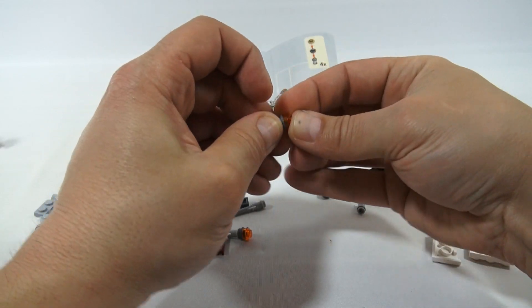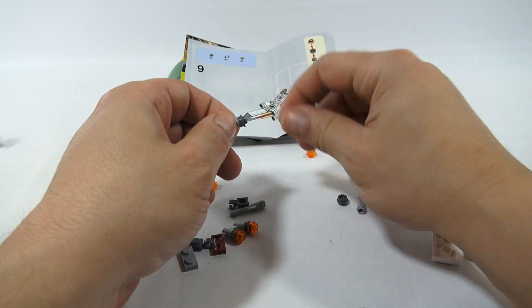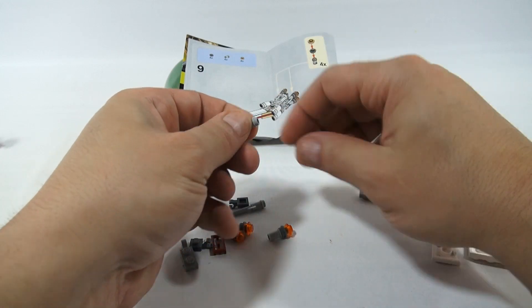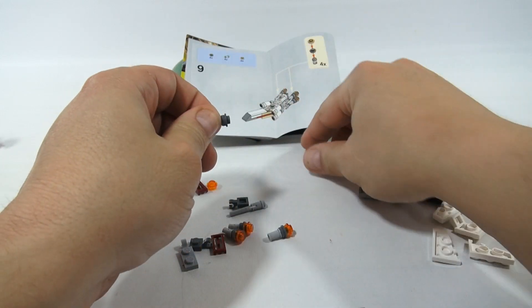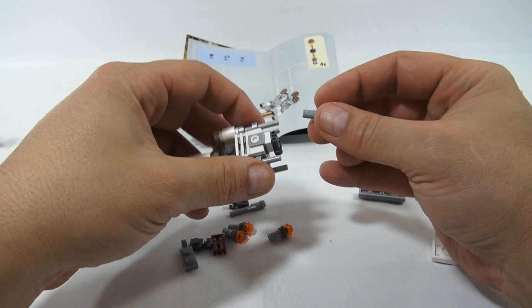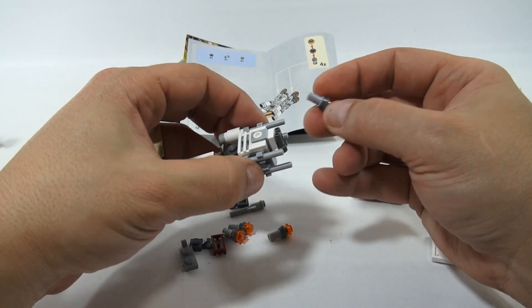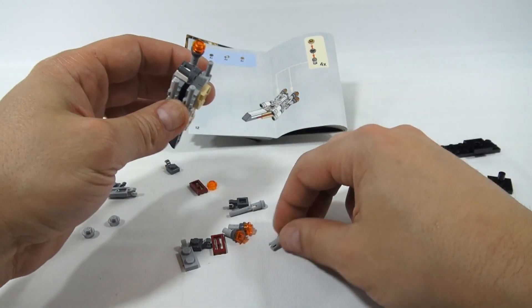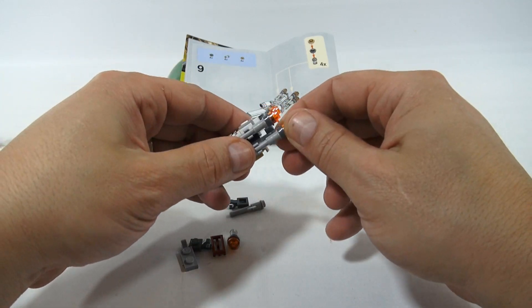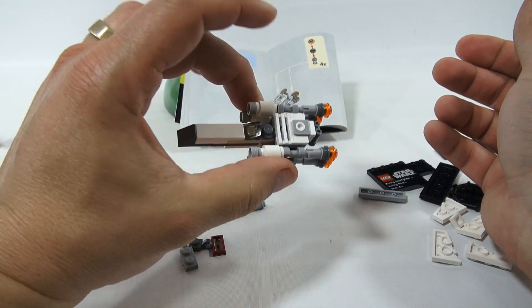So when you build, do you zone out? Do you put music on? How do you all build your Lego sets? I kind of zone out. So even now, making the video, I zone out a little. So one, I want to do it right. And two, looks like those four go there. Okay, we're getting there.